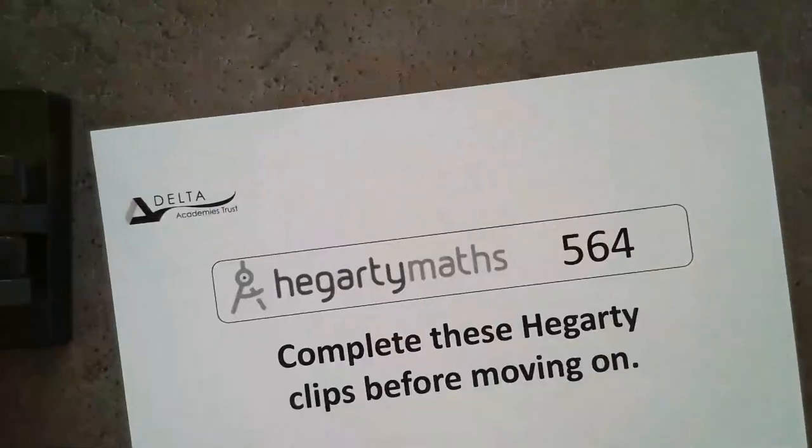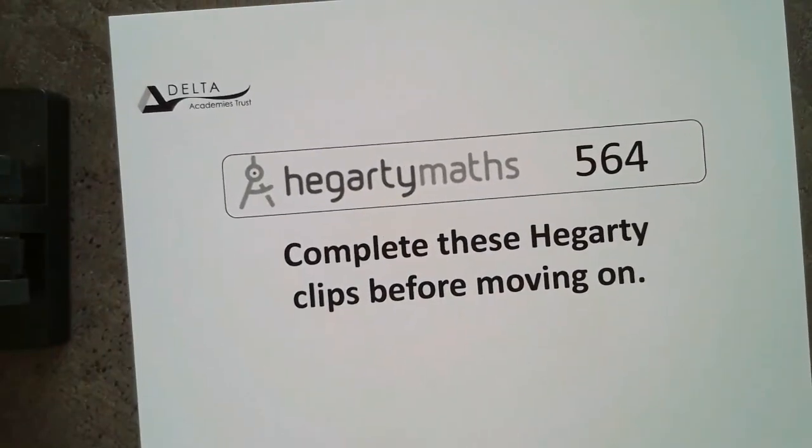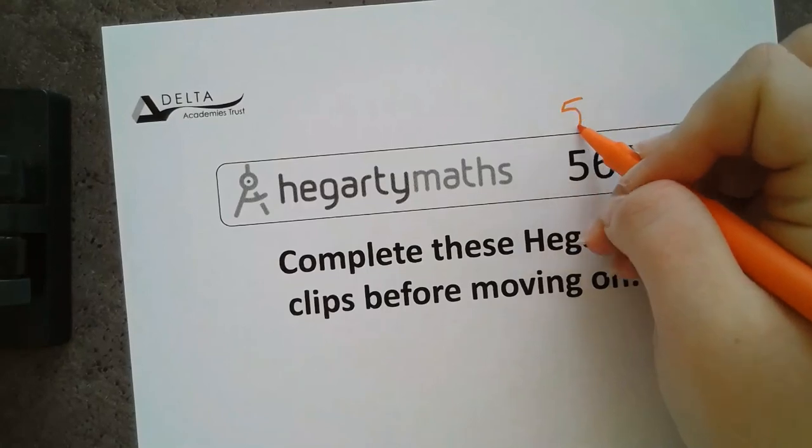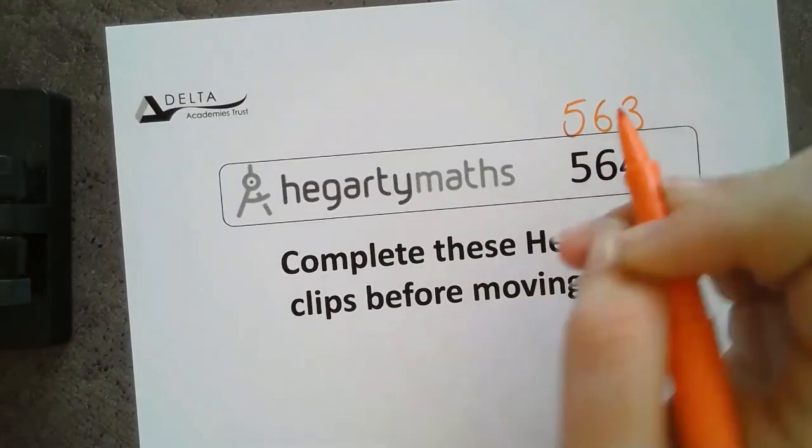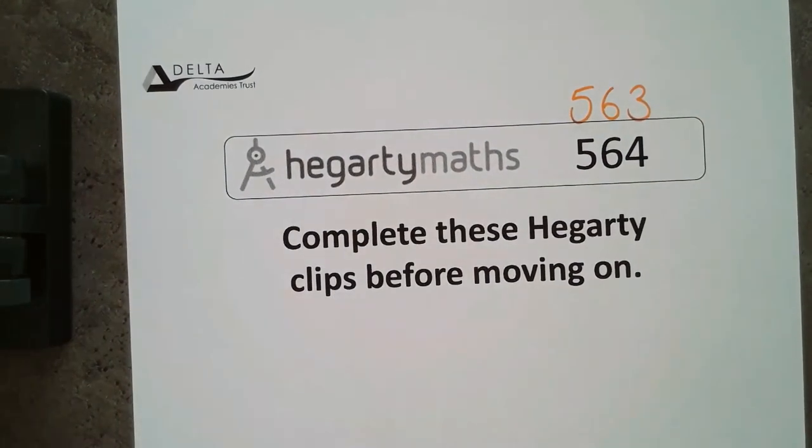Literally, the only thing left to do now is to make sure you're looking at those Hegarty clips. So, earlier on, we said we could have a look at 563. So, that's 563 and 564. You're going to want 70% on those to prove that you remember everything and that we can move on to the next lesson.